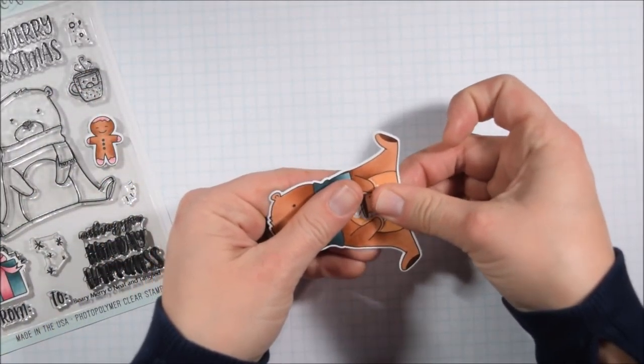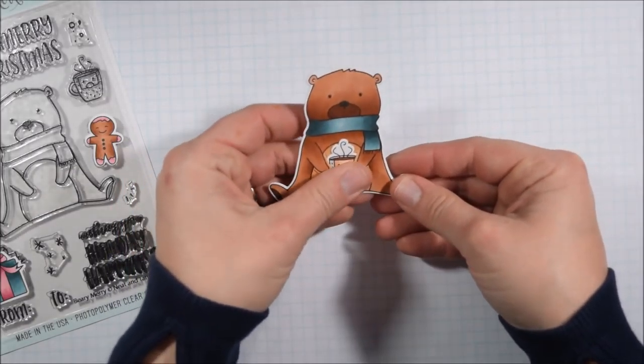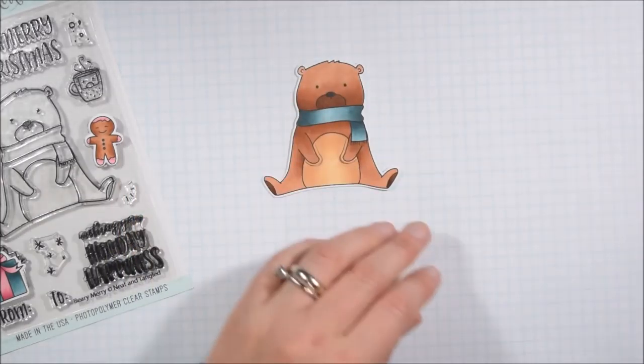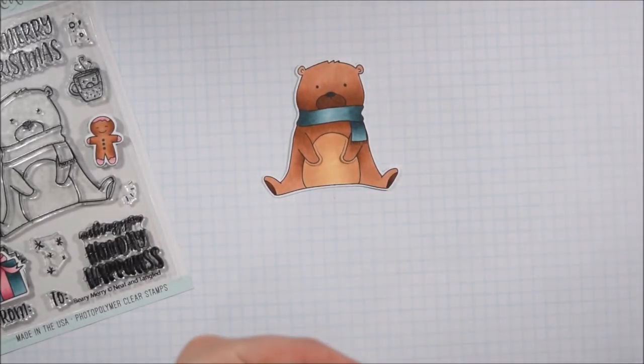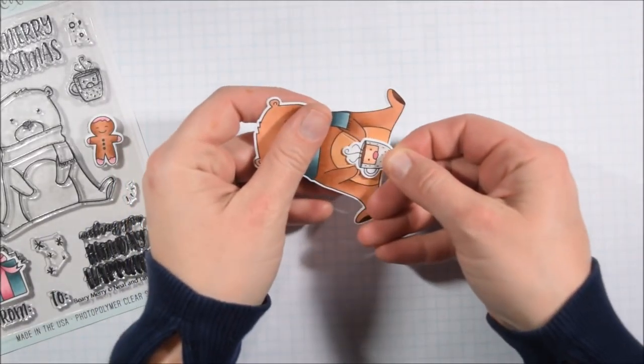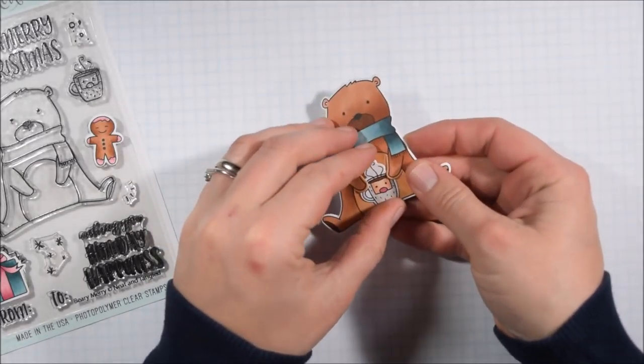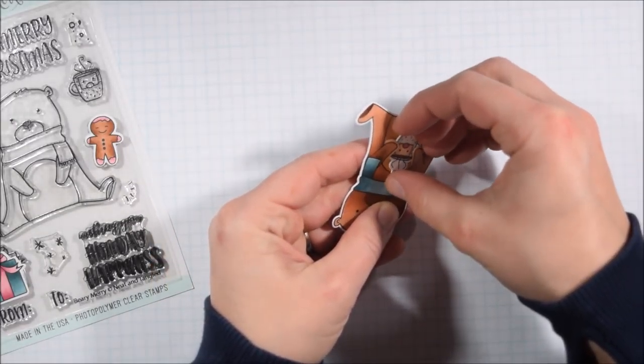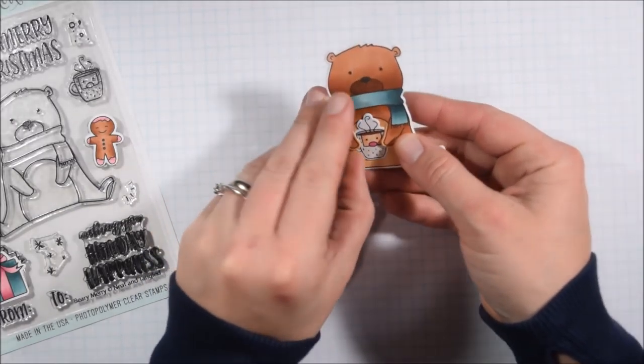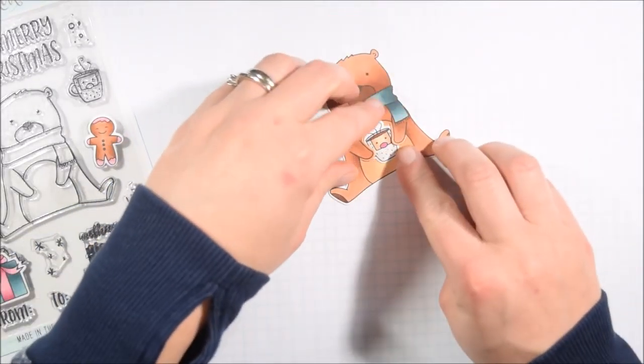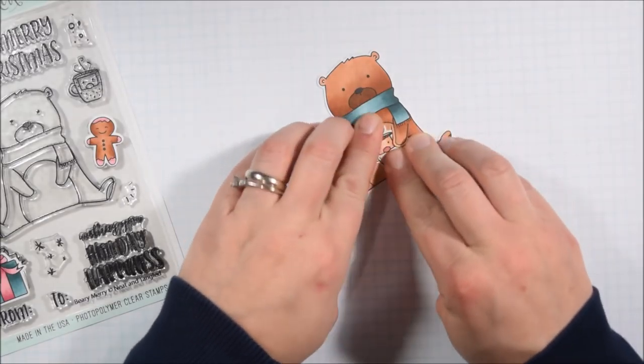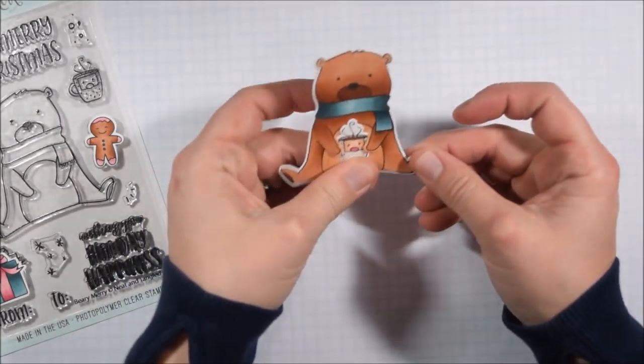I do own coordinating dies for this particular stamp set because as you can see the bear can hold things. So the die cut that you buy from Neat and Tangled cuts the bear's hands and therefore I can slip this inside of his hands and to me that makes it worth it. When a die cut can let you do something special I will invest in the dies.